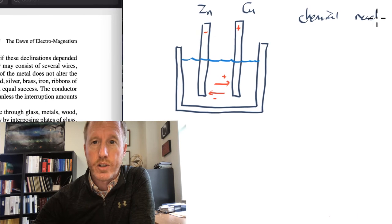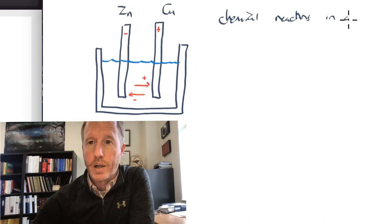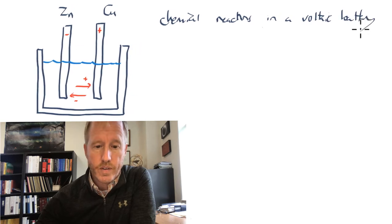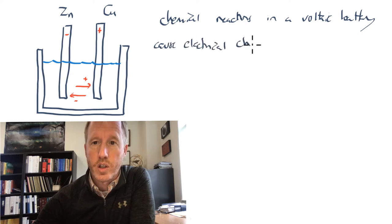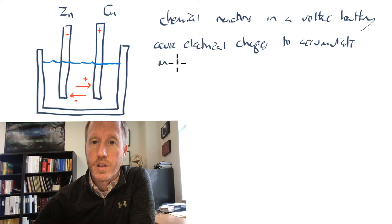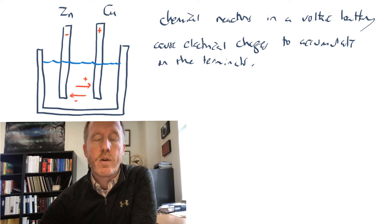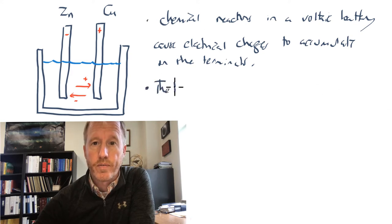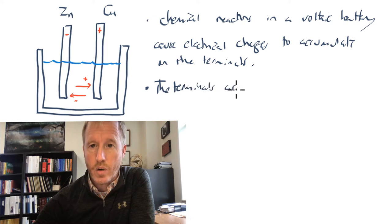So chemical reactions in a voltaic battery cause electrical charges to accumulate on the terminals. That is the point that's being made here. Now, these terminals acquire an electric potential difference. And this is today measured in volts. So the terminals acquire an electric potential difference.